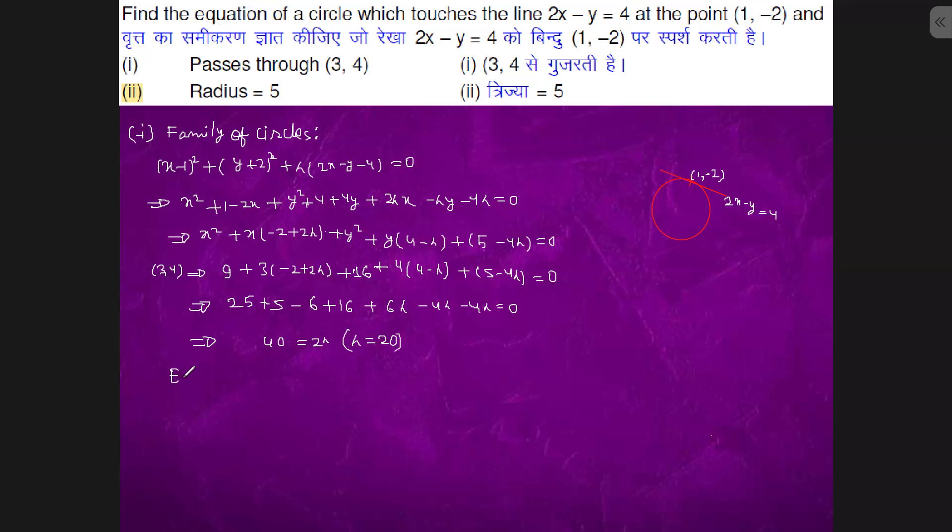So equation of circle is: x² + 38x + y² - 36y - 155 = 0.